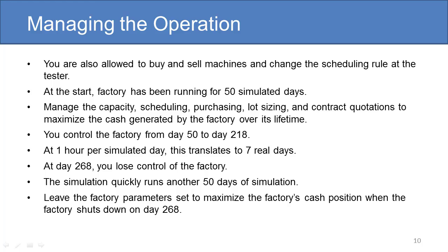You are also allowed to buy and sell machines and change the scheduling rule at the tester. The factory has been running for 50 simulated days, and management has recalled the High Powered Operations Team — you — to manage the capacity, scheduling, purchasing, lot sizing, and contract quotations to maximize the cash generated by the factory over its lifetime. Management is not providing any operating budget beyond the cash generated by the factory itself.